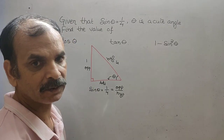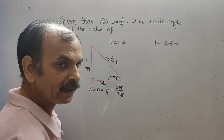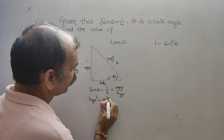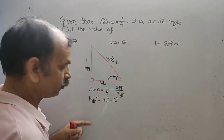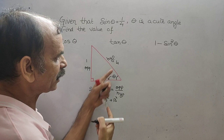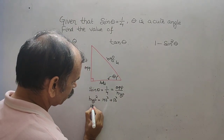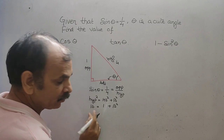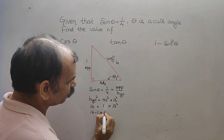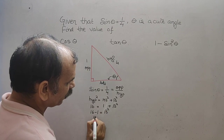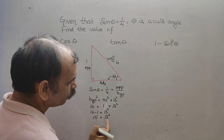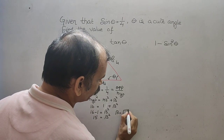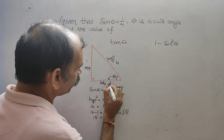Now we will find out adjacent. By Pythagoras theorem, hypotenuse square is equal to height square plus base square. Substituting the values: 4 square is 16, equal to 1 square plus base square. So 16 minus 1 equals base square, that is 15 equals base square. Therefore, base is equal to root over 15. So the adjacent side is root over 15.